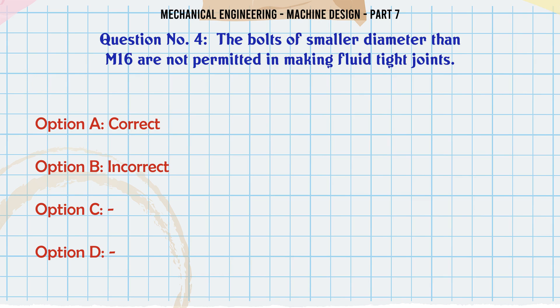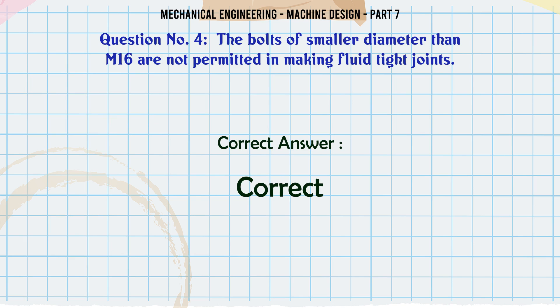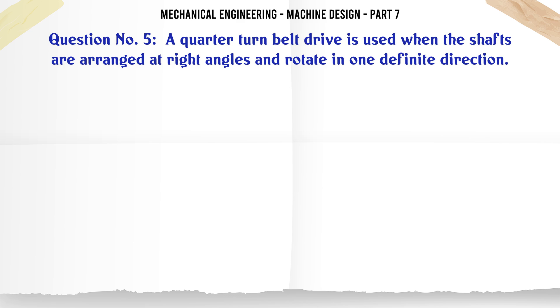The bolts of smaller diameter than M16 are not permitted in making fluid tight joints. a) Correct, b) Incorrect. The correct answer is: Correct.